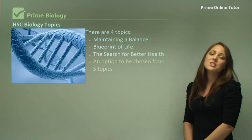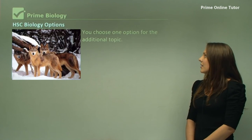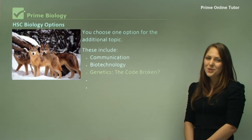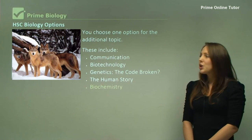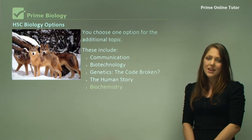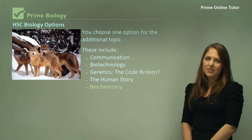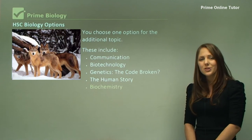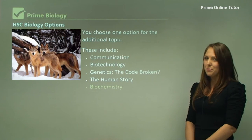The option topic is to be chosen from five different options. These include communication, biotechnology, genetics — the code broken — the human story, and biochemistry. Communication is the most common one that biology teachers choose, and that tends to be because it's a little bit easier than the others. However, biotechnology and genetics: the code broken are also great to choose because they overlap with the biology syllabus — specifically with Blueprint of Life.